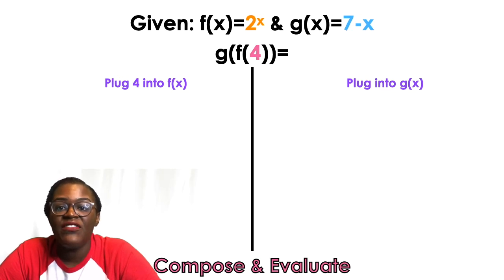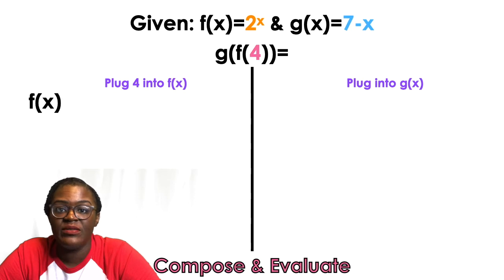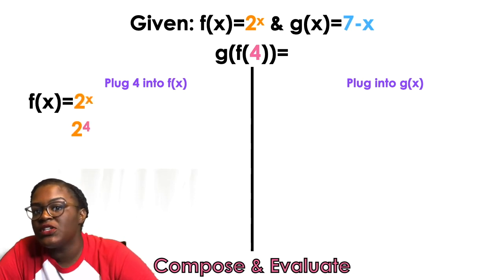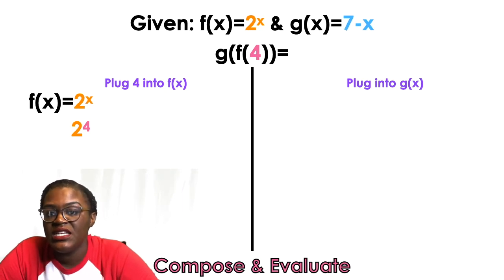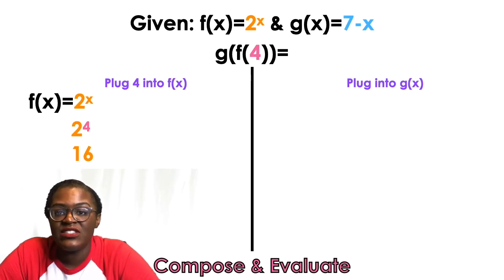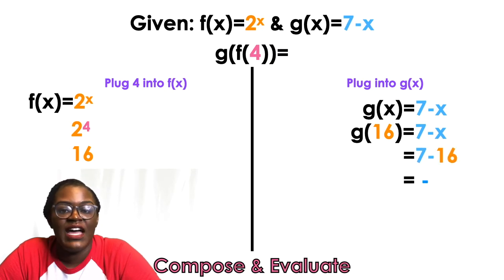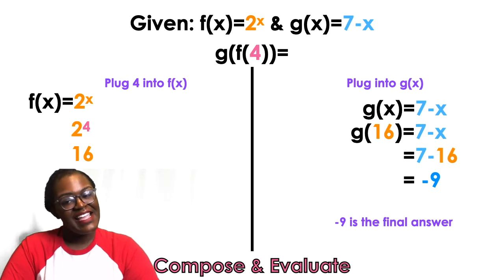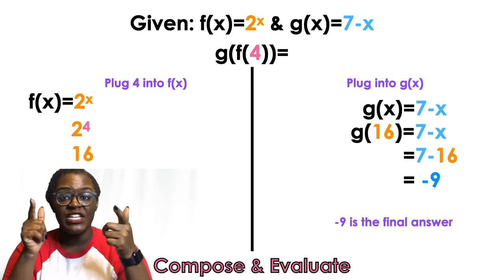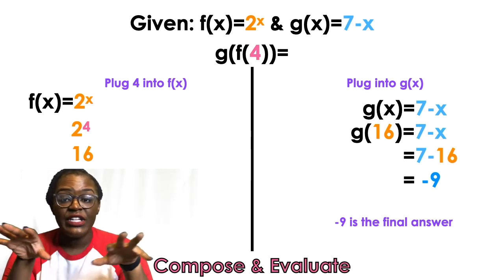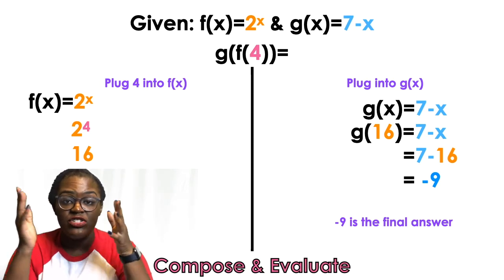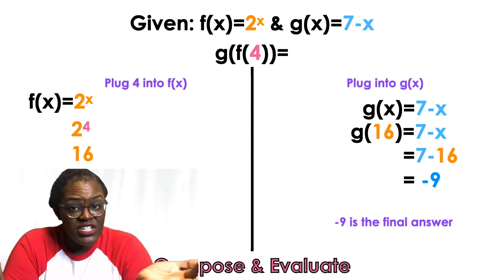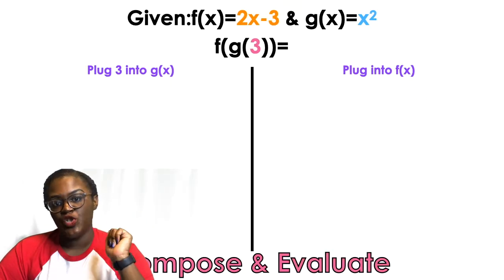Now we're doing G of F of 4 — this time we plug 4 into F first, then plug that result into G. F(4) = 2 to the power of 4, which is 16. Then plug 16 into G: 7 minus 16 equals negative 9. So negative 9 is the final answer. It's really just learning what the notation is telling you to do.